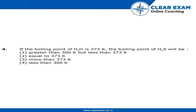In this question, we need to find out the boiling point of H2S. The boiling point of H2O is 373 K, so the answer will not be equal to 373 K, neither will it be more than 373 K. H2S, however, boils at a much lesser temperature than H2O. Therefore, the answer is less than 300 K.